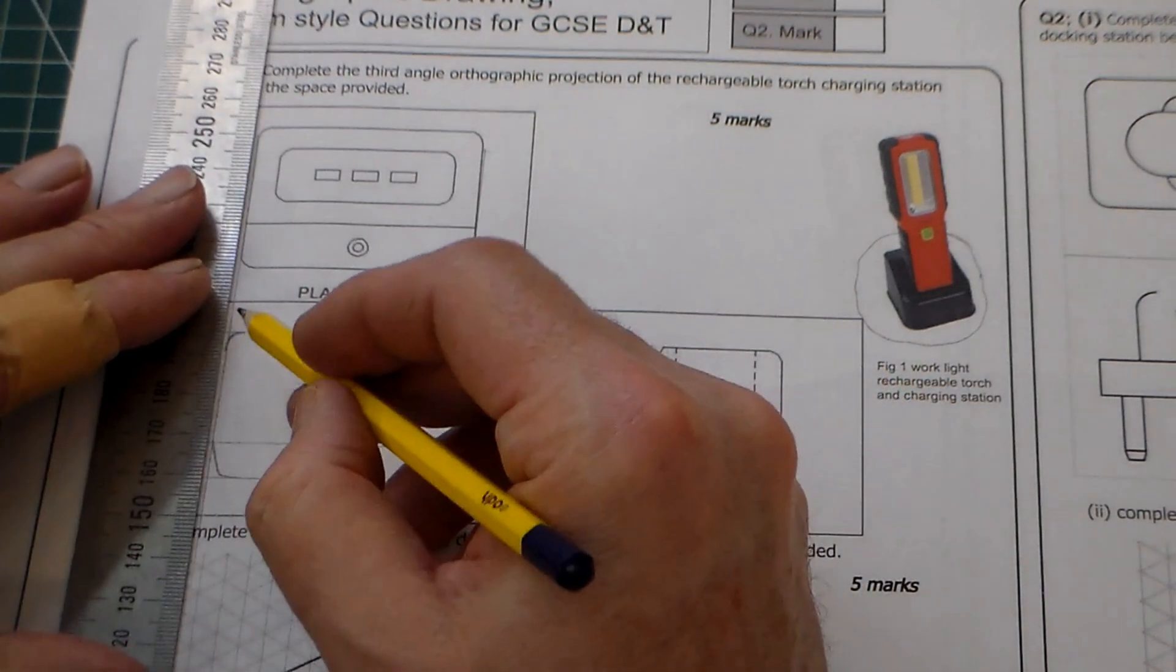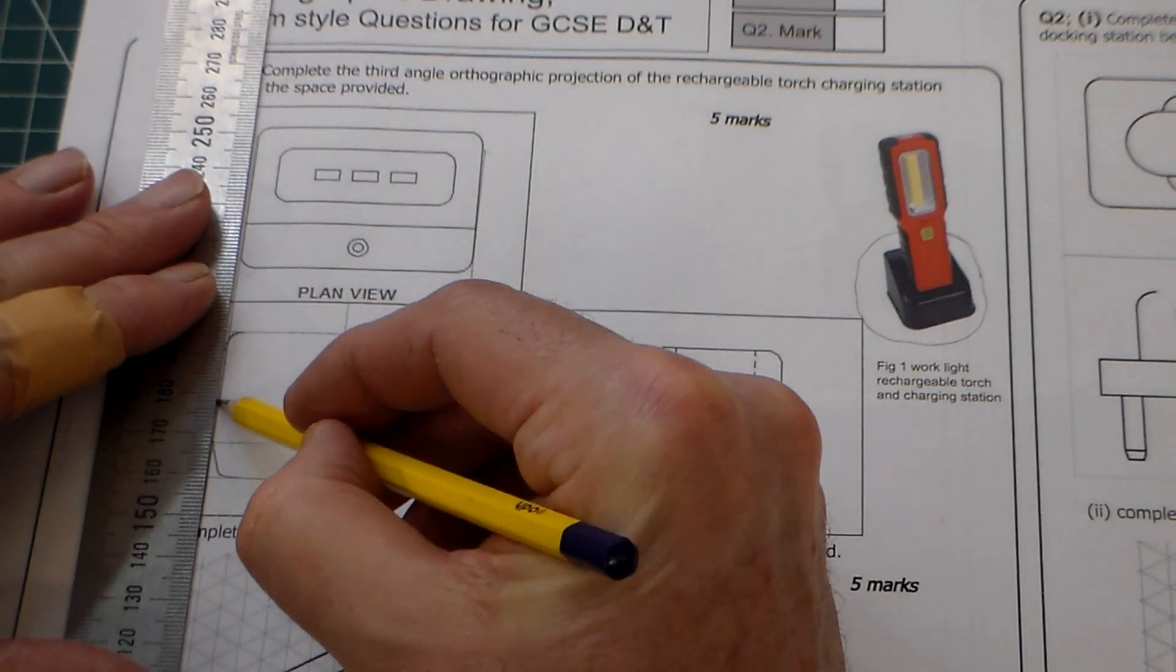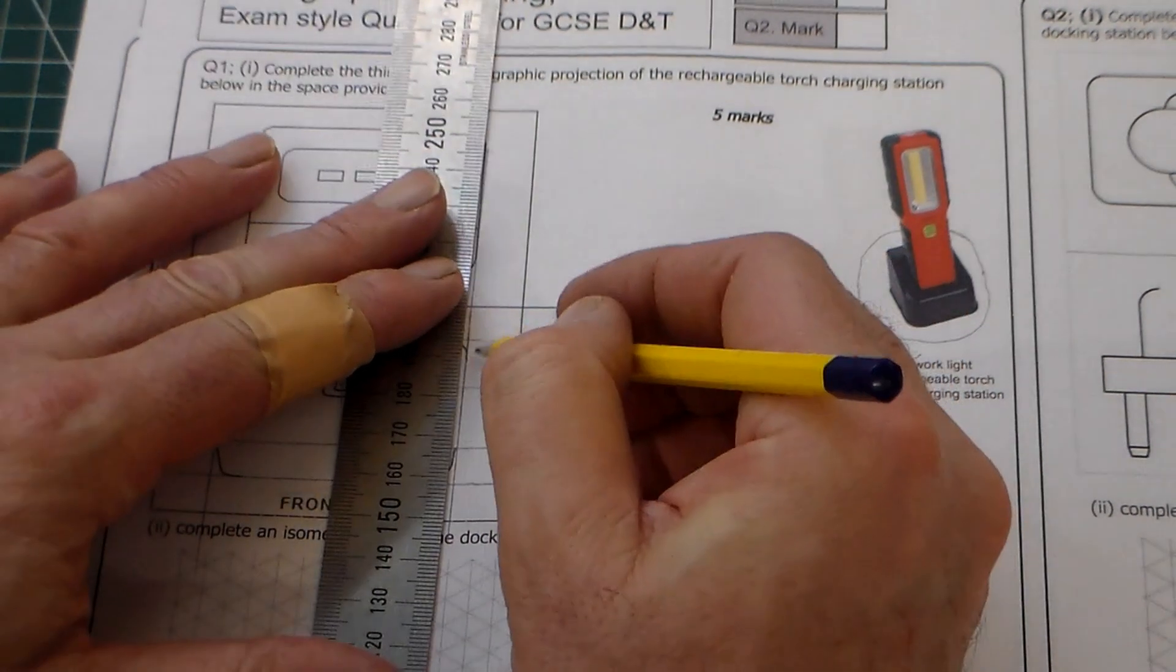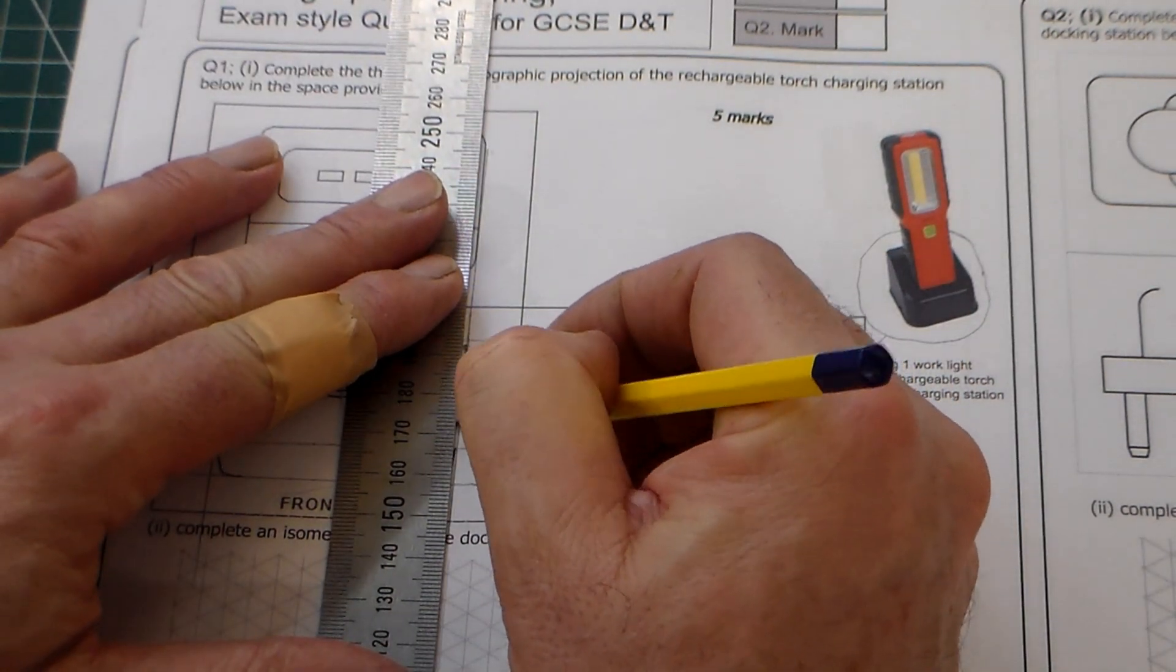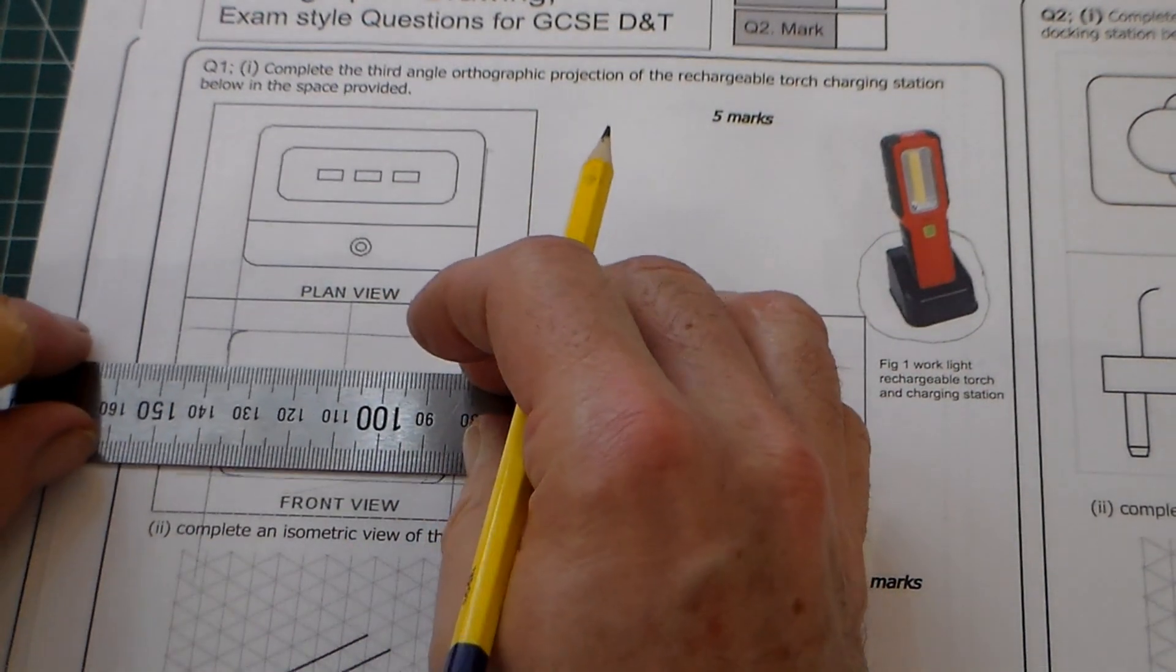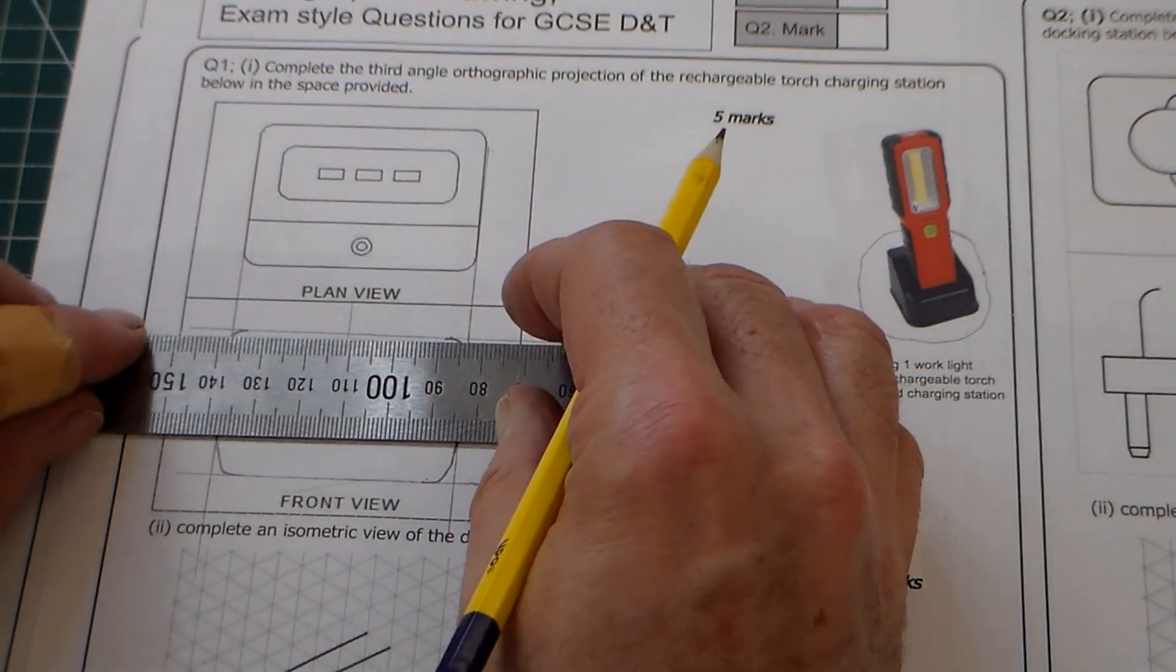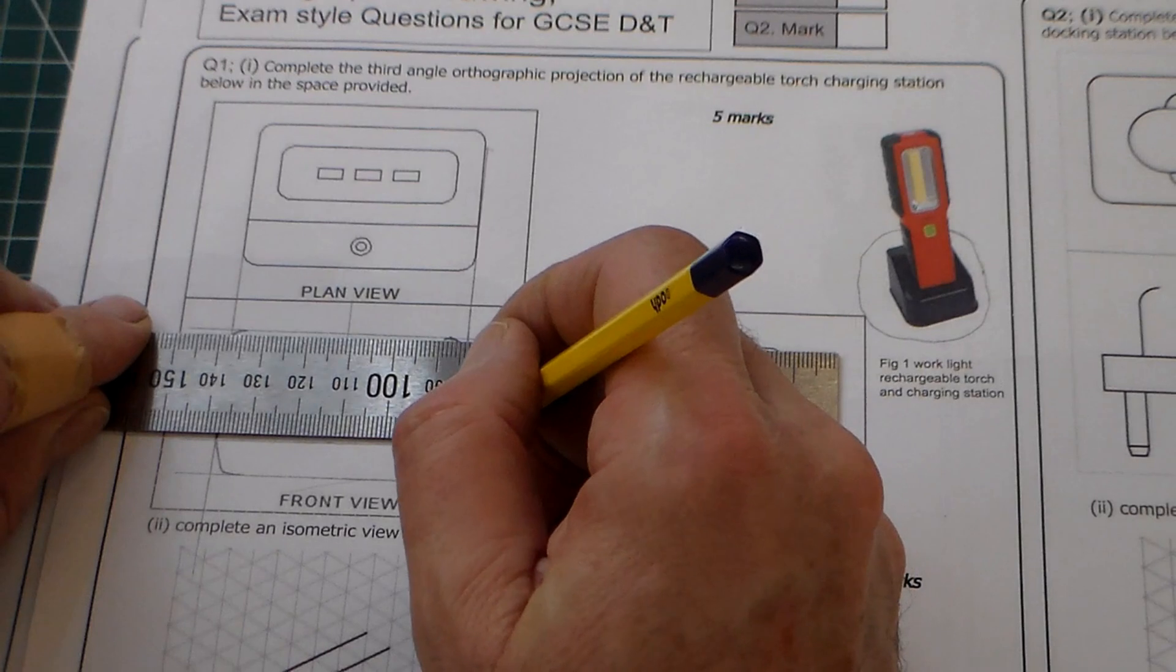Then, we're going to do what we call lining in. So all of the lines that we want to keep, or the outlines of the actual object, we're going to go around those with a pencil and just make that a slightly thicker line, so that the object stands out.